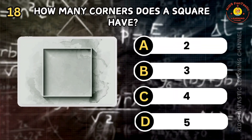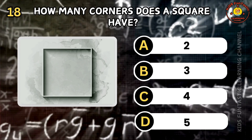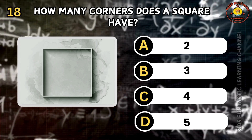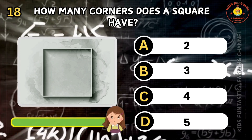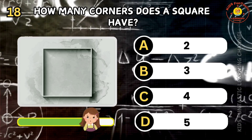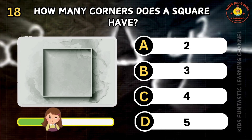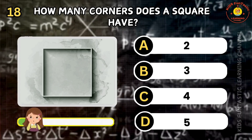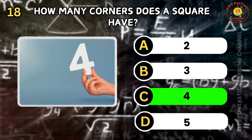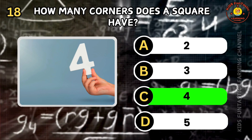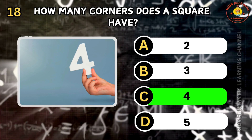Question 18. How many corners does a square have? A: 2, B: 3, C: 4, D: 5. You're really good at this. The correct answer is C. A square has four corners.